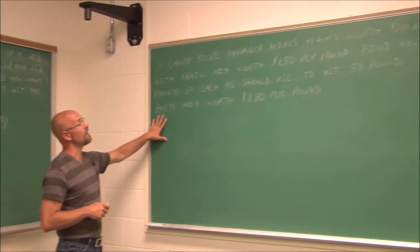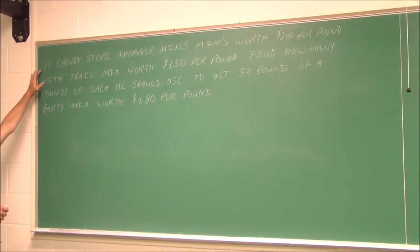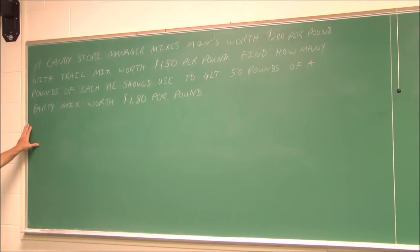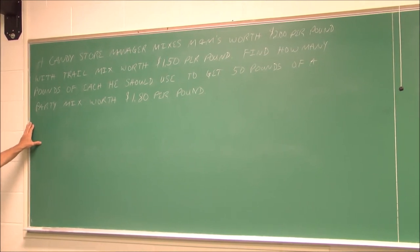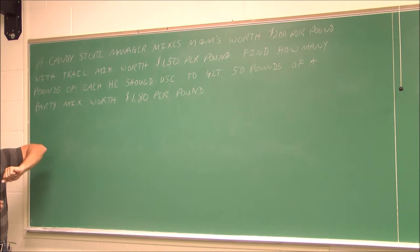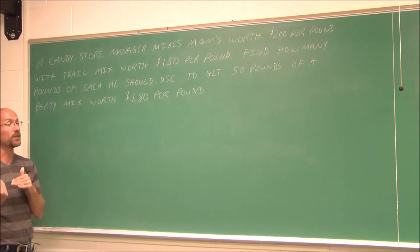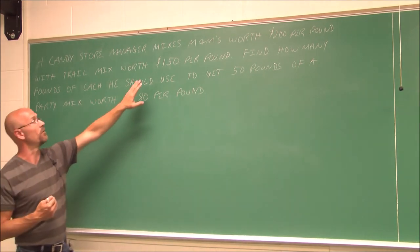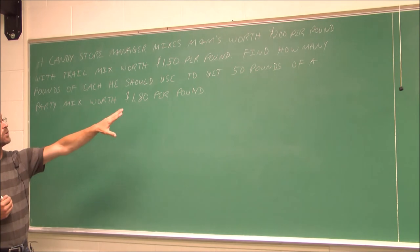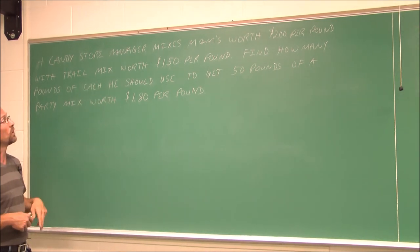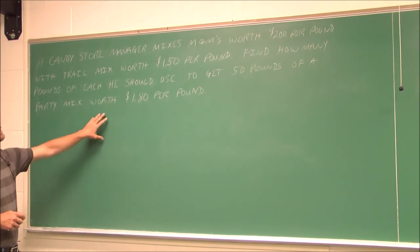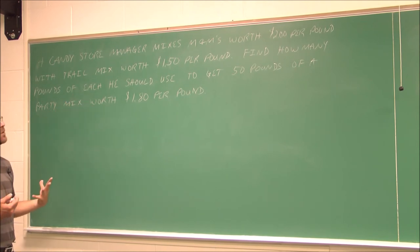All right. This is our last example for this section 8.5. A candy store manager mixes M&Ms worth $2 per pound with a trail mix worth $1.50 per pound. Find how many pounds of each he should use to get 50 pounds of a party mix worth $1.80 per pound. This is very similar to the previous example. We have a value and an amount. So value times the amount is what we're going to be looking at. So let's think about what we have. We have to assign variables.